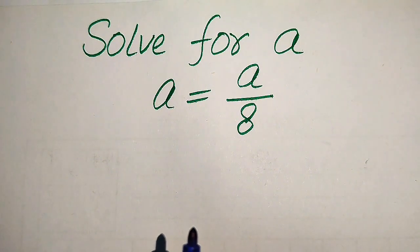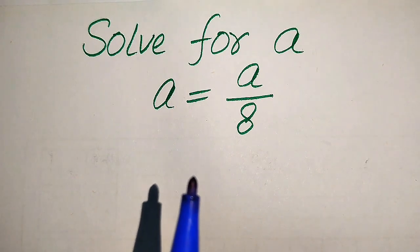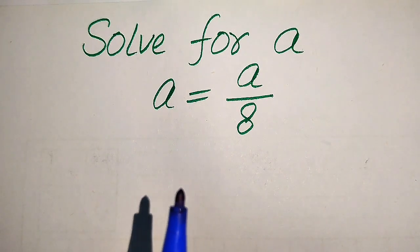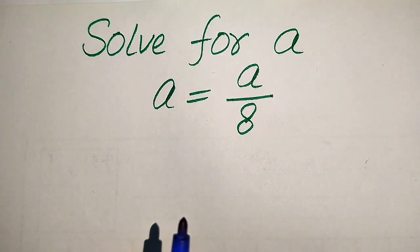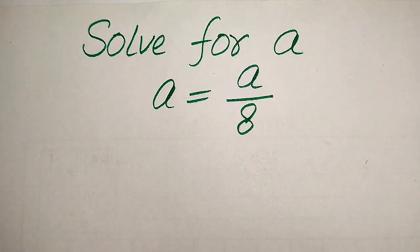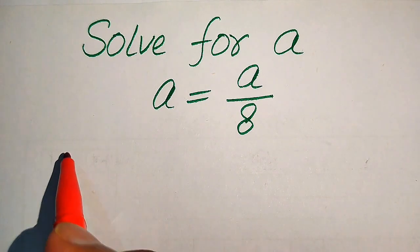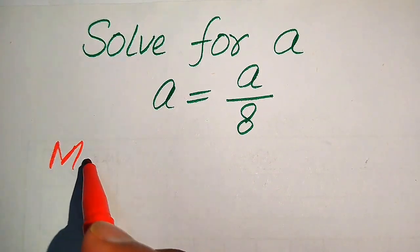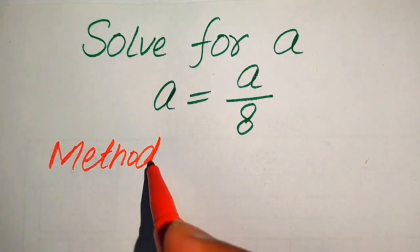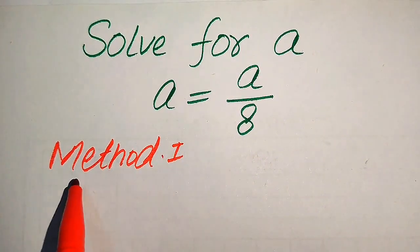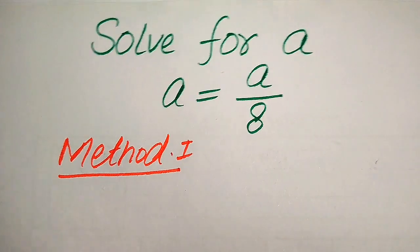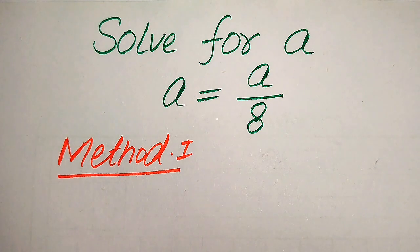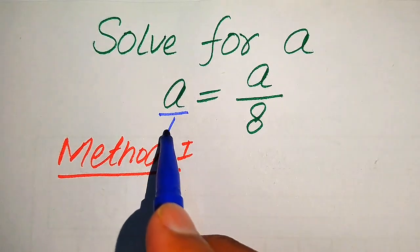We will solve this problem using two methods. If you have any other method in mind, please don't hesitate to write it in the comment section. In the first method, we need to cross multiply the terms. The denominator of this term is 1.